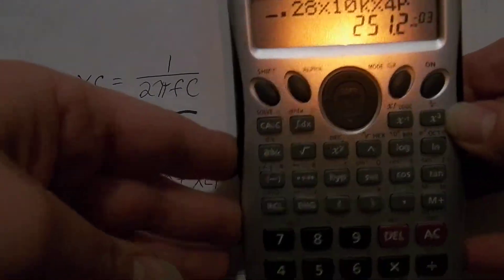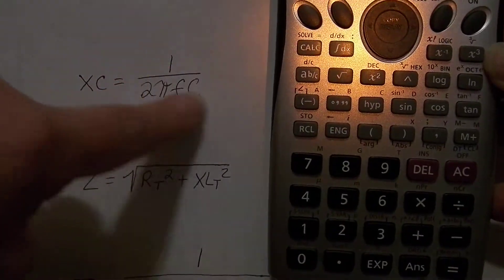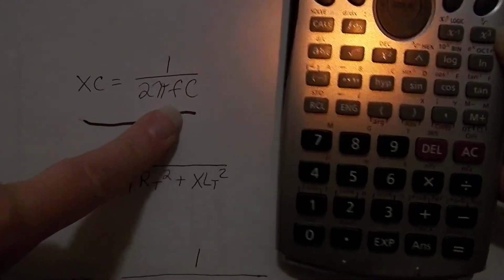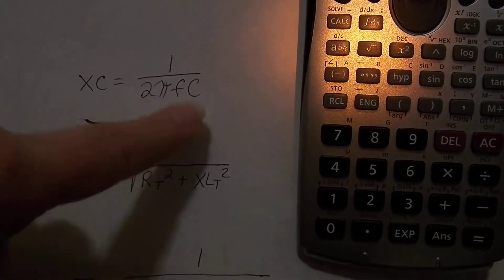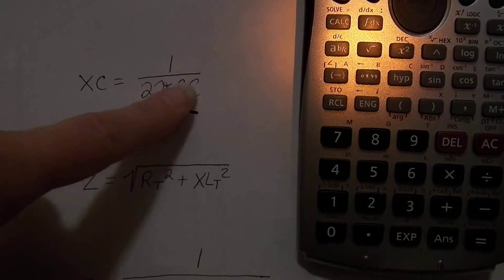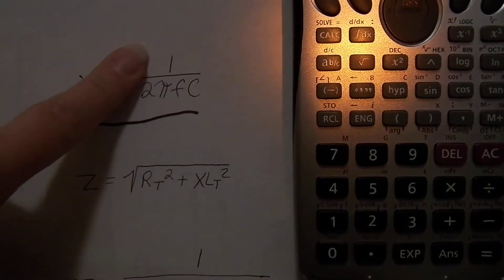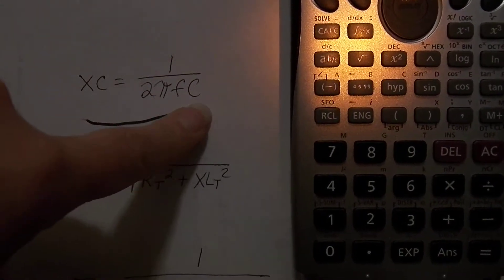Alright, so we have our number 251.2 micro, but as you see we've only done this bottom portion. That would be the first part of your order of operations. So in the order of operations, if you were to take 1 divided by 2π times FC, it would do 1 over 6.28.